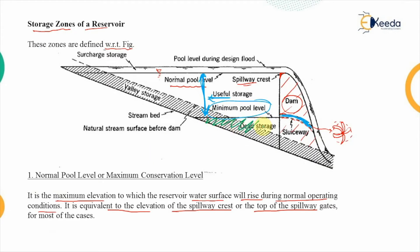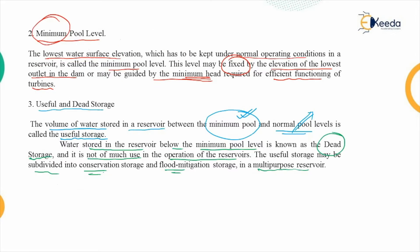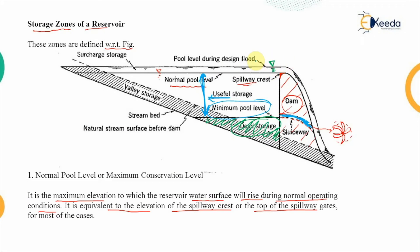The next level is the maximum pool level or full reservoir level (FSL — full service reservoir level). During high floods, water is allowed over the spillway, causing the water level in the reservoir to rise above the normal pool level. The maximum level to which the water rises during the worst design flood is known as the maximum pool level or FSL.